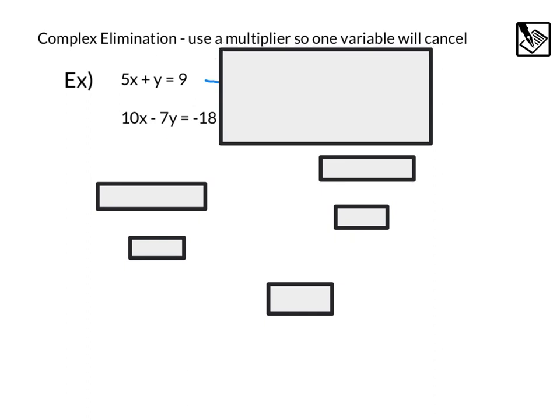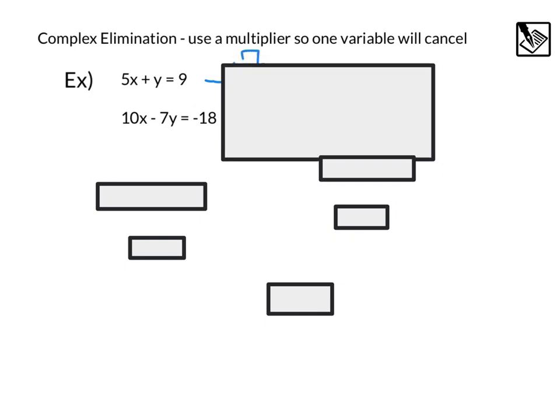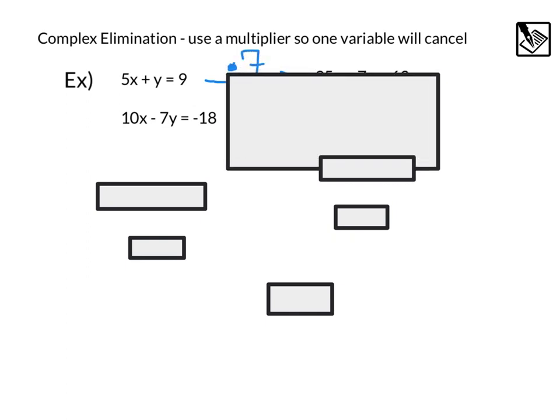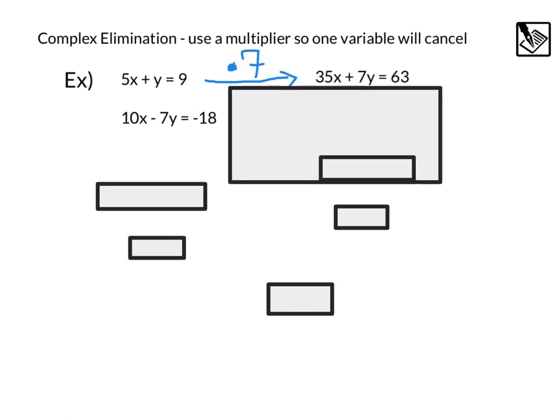But what we can do here is I'm going to take this first equation and I'm going to say let's multiply that first equation by a 7. And we'll see why we chose a 7 here. So if I distribute that, I'd get 5 times 7, 35x plus 7y equals 9 times 7, which is 63.